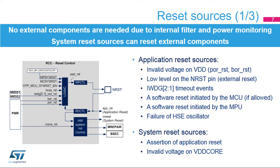The first type is the application reset, which resets most registers except those in the backup domain. Many sources can generate an application reset: an invalid voltage on the VDD supply; a brownout function with user-configurable threshold levels; a low level on the NRST pad; a timeout from one of the independent watchdogs IWDG2 and IWDG1; a software reset request from the Cortex-M4 (MCU) if option bytes allow it; a software reset from the Cortex-A7 (MPU) via RCC registers; or a failure on the HSE oscillator. Note that the application reset asserts the NRST pad, allowing reset of external components.